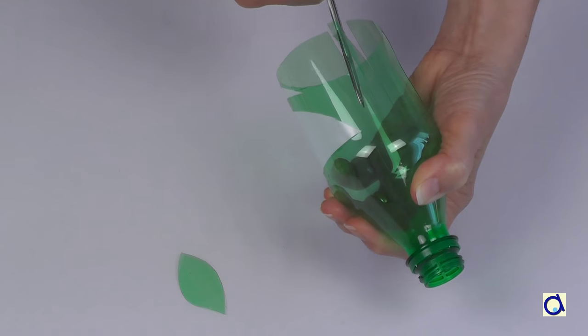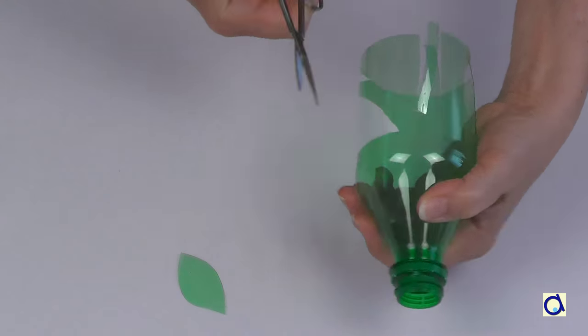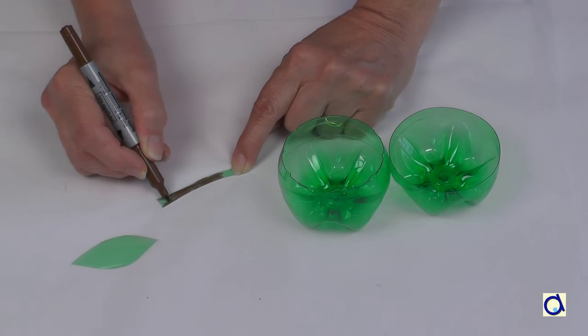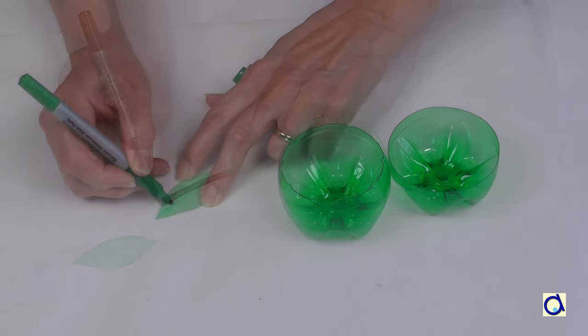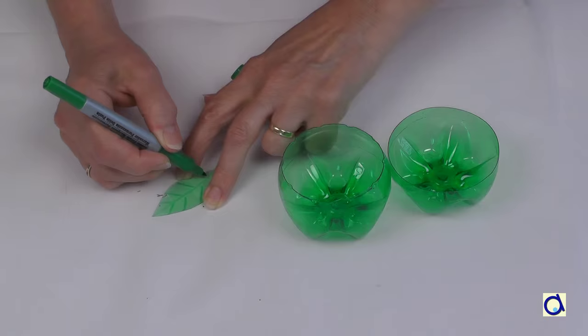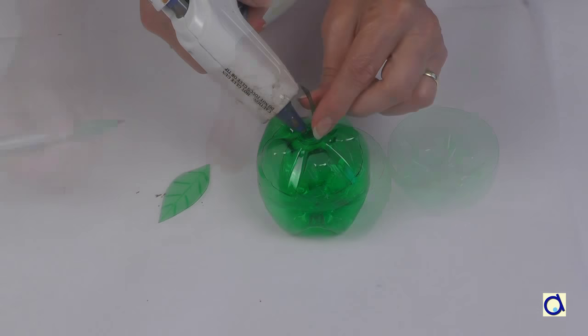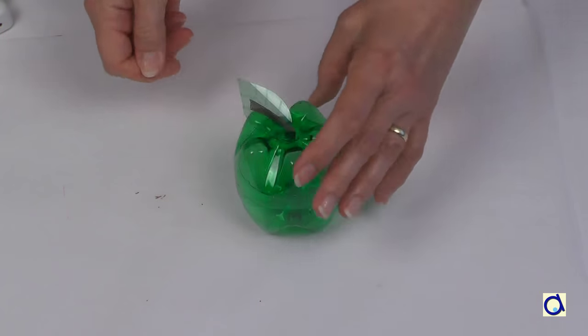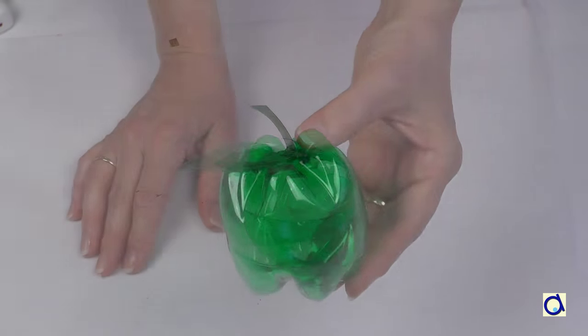Cut a leaf and a stem from the leftover part of the bottle. Take the stem and colour it brown with a permanent marker. Take the leaf and draw the veins with a green permanent marker. Glue the stem and leaf in place with the glue gun. And here is your first complete apple.